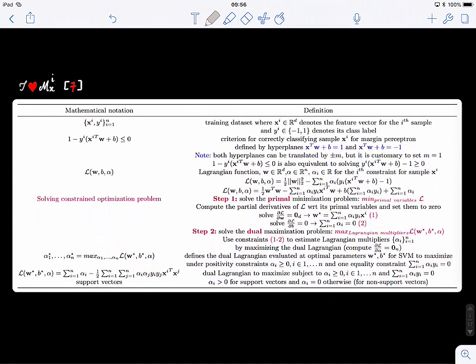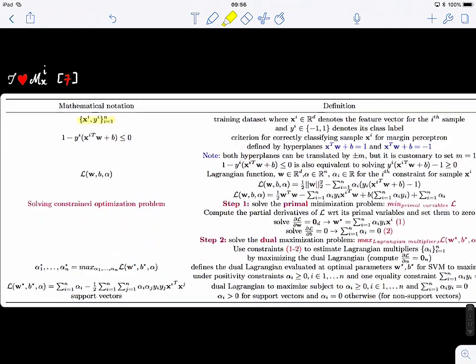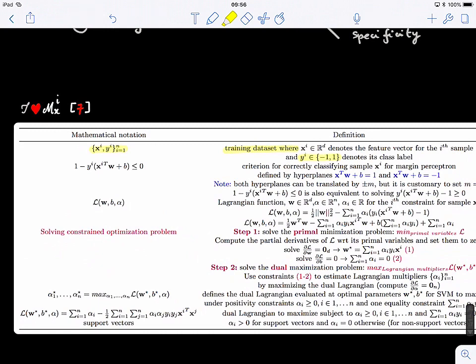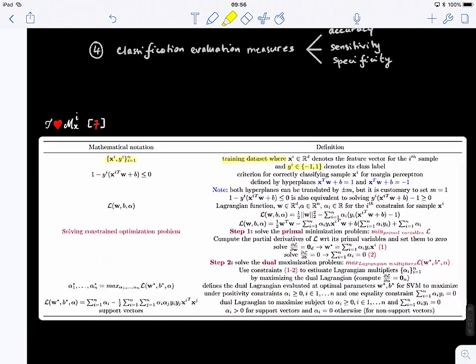Just a brief recap of what we learned in the previous lecture. We're looking at classification problems. We have a training dataset with N samples and N labels. So the label yi belongs to minus one or one. We have two classes, it's a binary classification problem.